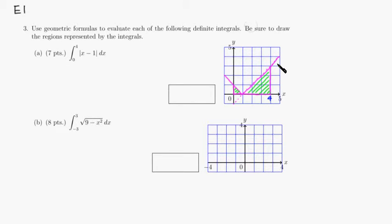In terms of area, triangle is 1 half base times height. This little one base is 1 height is 1, so 1 half times 1 times 1. The bigger one base is 3 and height is 3, so 1 half times 3 times 3. This gives 1 half plus 9 halves, which is 10 halves, equal to 5. Therefore the value of the definite integral is 5.